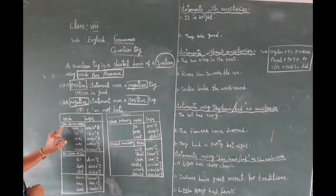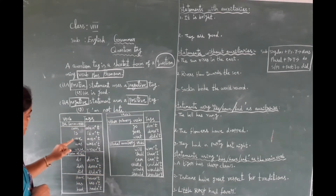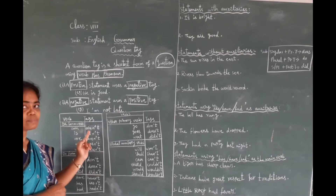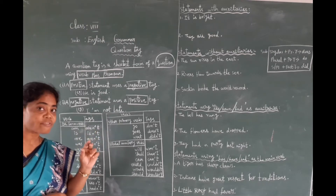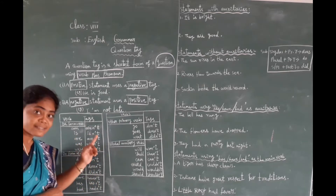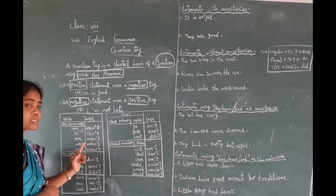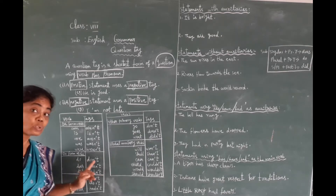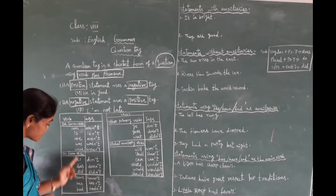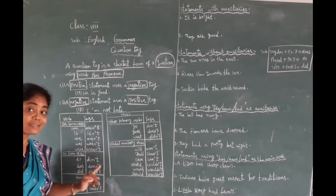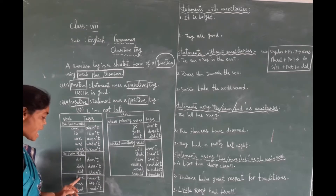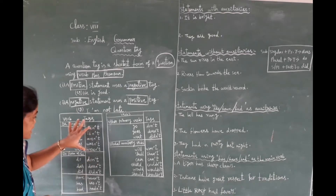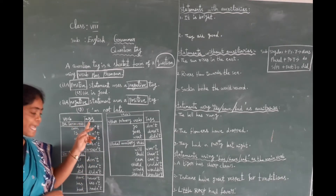Now let us look at the auxiliaries and their tag forms. For 'be' form verbals: 'is' becomes 'isn't', 'are' becomes 'aren't', 'was' becomes 'wasn't', 'were' becomes 'weren't'. For do-form verbs: 'do' becomes 'don't', 'does' becomes 'doesn't', 'did' becomes 'didn't'. For have-form auxiliaries: 'have' becomes 'haven't', 'has' becomes 'hasn't', 'had' becomes 'hadn't'. These positive auxiliaries take negative tags.